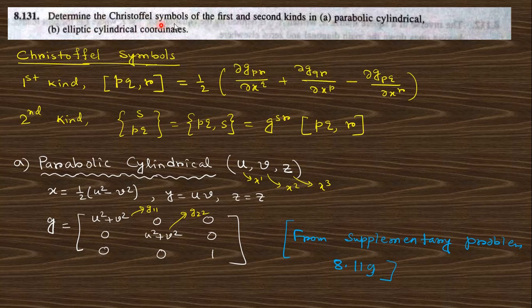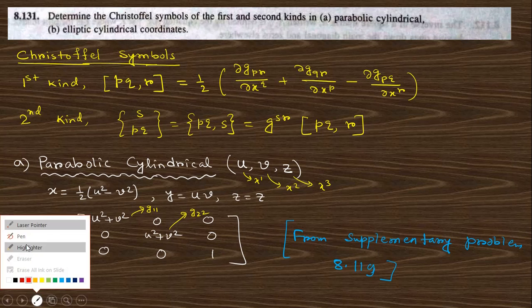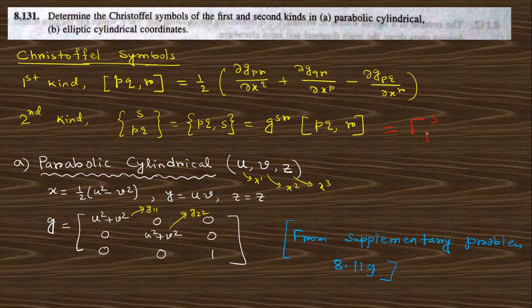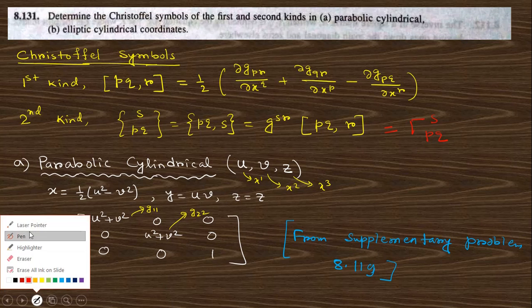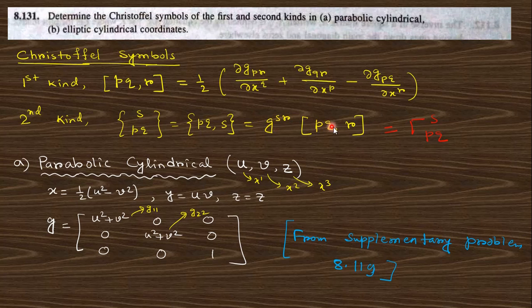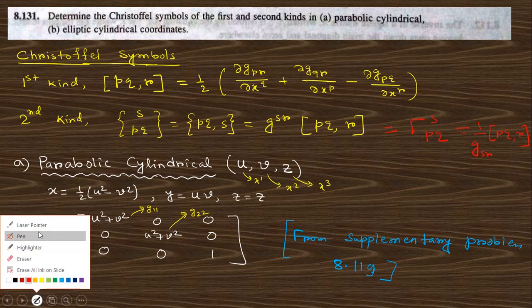Next question says determine Christoffel symbol of first kind and second kind. The previous one only the first kind and now we need to find out first kind and second kind of parabolic cylindrical and the elliptic cylindrical coordinate system. This is the formula for first kind and this is the formula of second kind. The second kind was represented with SPQ and this is PQS. There is another representation also, this can be also written as 1 by GSR into PQR. So we just follow this formula to find out the second kind.